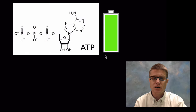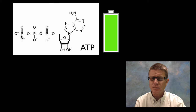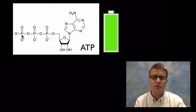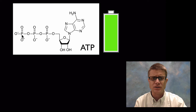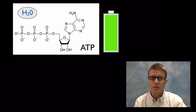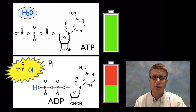So what is ATP? We've got our adenine, our ribose sugar, and our three phosphates — you can think of it like a recharged battery with a certain amount of potential energy. If we were to take ATP — which would look like salt in solid form — and add it to water, it would all hydrolyze, breaking down into ADP.